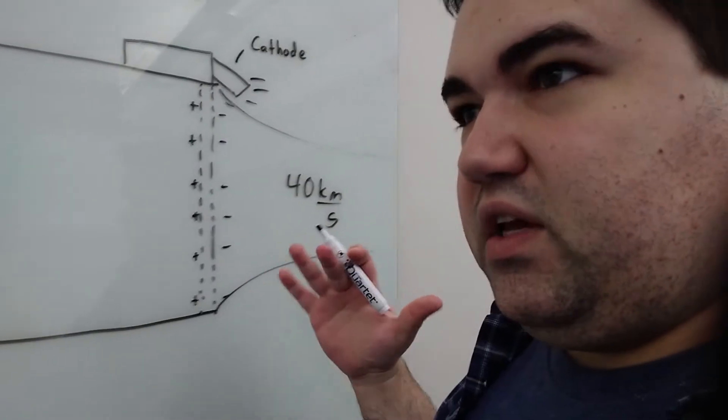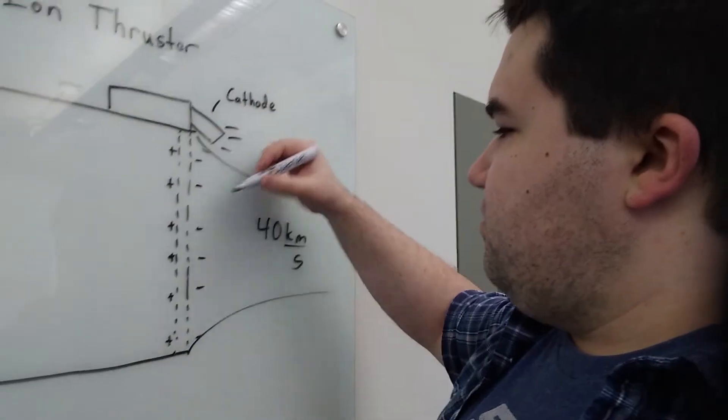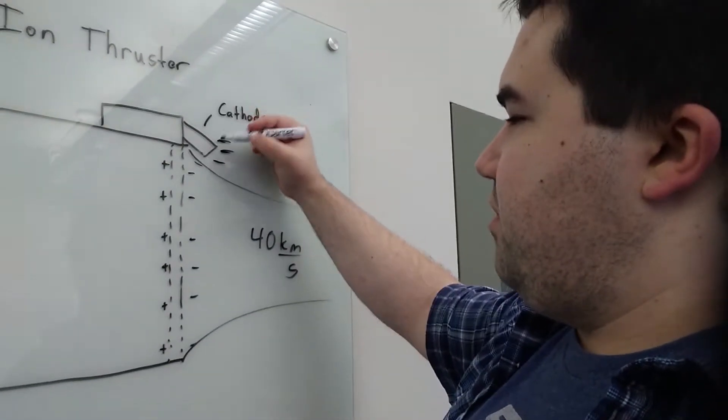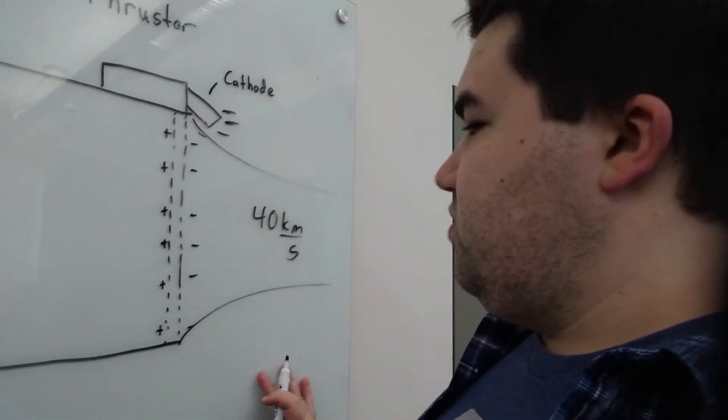The escape velocity for Earth is only 11.2 kilometers per second. And as they're being pushed out, the positively charged xenon atoms get reintroduced with these electrons that are coming out of the cathode, and they reneutralize, which is pretty cool.